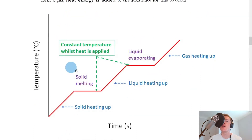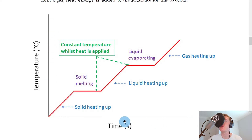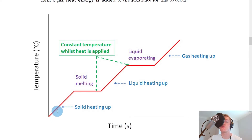Have a look at this example of a heating curve. We've got temperature in degrees Celsius plotted on the y-axis and time in seconds plotted on the x-axis. There are no numbers on the axes because we're more interested in the shape of the graph. Starting at the origin, we have a solid material. If you apply heat to that solid, it will start to heat up and its temperature will increase over time. When we reach this point, we reach the melting point of the solid, where the temperature remains constant even though we're still adding heat.